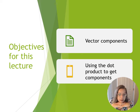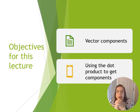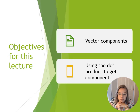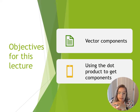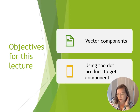In this video, we're going to talk about things called components, or components of vectors. You're going to be introduced to two different types of components: one's called a vector component, and the other one's called a scalar component. You'll learn how to visualize the vector component and how to calculate both the vector and the scalar component using the dot product.